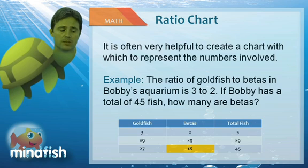Well that multiplier, 9, is what we need to apply to the two smaller parts, goldfish and betas, to find out what they are equal to in the larger set. So we multiply the 3 by 9 to say there are 27 goldfish, and then we multiply the 2 by 9 to say there are 18 betas. So in this case if we want the number of betas, the answer is 18.